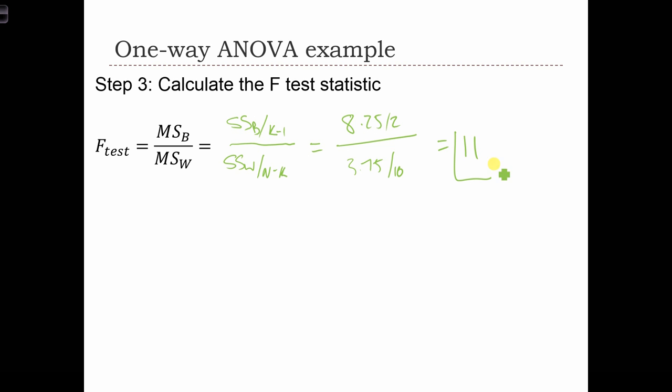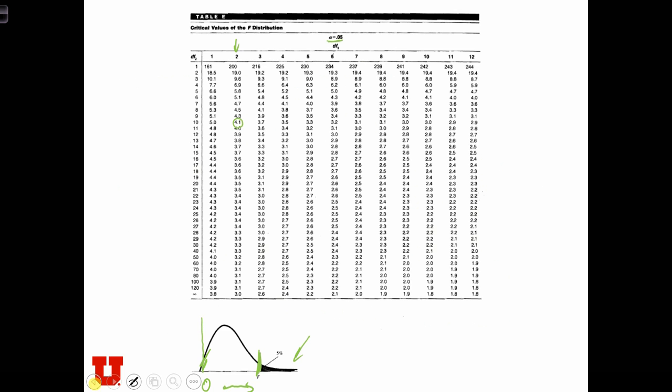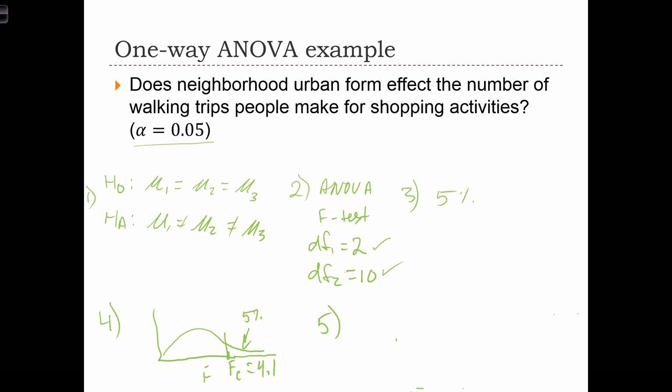So our F-test equals 11. Is that in the range of acceptance or rejection? If we go back to where we set up our problem, we said that the critical value was 4.1. F equals 11. So where's our F-statistic? If this is 0 over here, and this is 4.1 over here, then our F-statistic is somewhere over here. F equals 11. And that's clearly in the tail of the distribution. So in step 6, the answer is we reject the null.